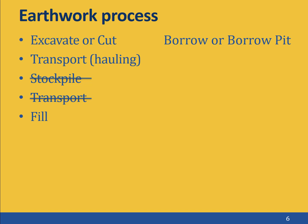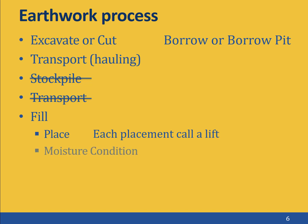The fill process itself has three steps. First, the soil must be properly placed at the fill site — it isn't just dumped there. Each placement is called a lift, and the material is no longer borrow but fill. After the soil is in place, it is usually moisture conditioned by either adding or removing water. Moisture content can dramatically affect soil behavior, and it's important to soil compaction. After the fill material is placed and moisture conditioned, it is compacted to increase its strength and reduce its compressibility.